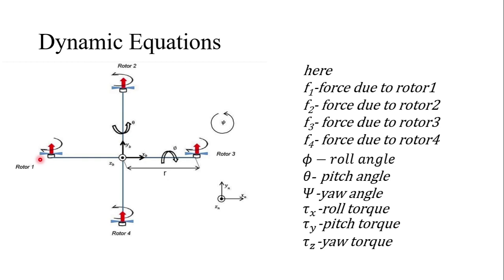Roll motion means rotation about the x axis. For rotation about the x axis, the torque provided by rotor 1 and rotor 3 is zero since they lie on the x axis and their moment arm is zero. The torque required for roll is provided by rotor 2 and rotor 4. The torque from rotor 2 is taken as positive (counterclockwise) and torque from rotor 4 is taken as negative (clockwise).